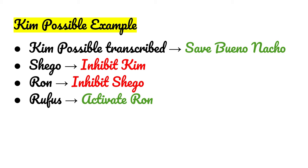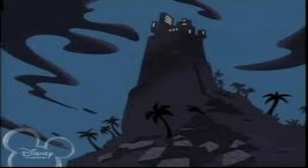Let's start with the path. Chigo will inhibit Kim transcribing it. Ron will inhibit Chigo from being able to inhibit Kim, and Rufus will activate the transcription of Ron to be able to inhibit Chigo. Kim, Ron, and Rufus are fighting the villain Chigo on her island lair to try to stop her from firing a laser destroying their favorite restaurant, Bueno Nacho. This is the developmental path.